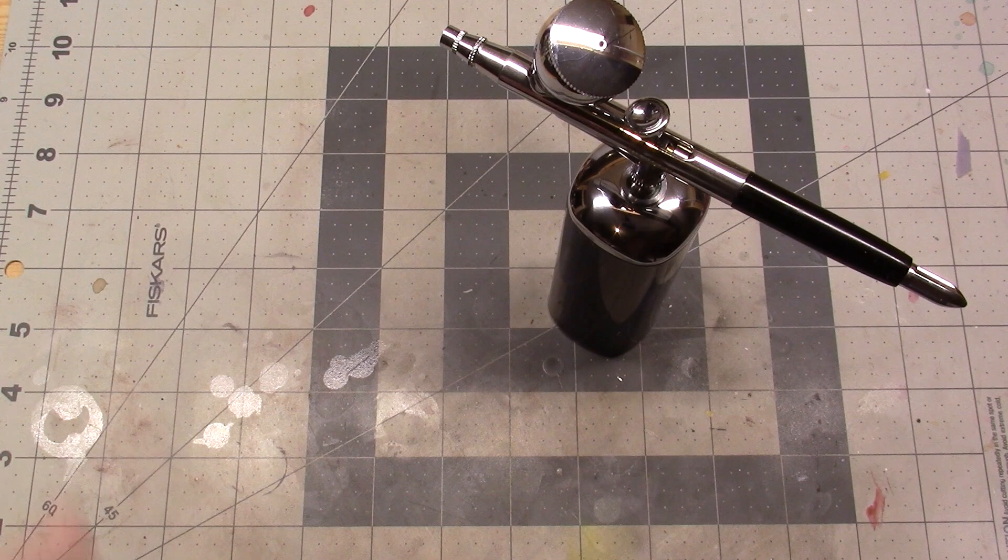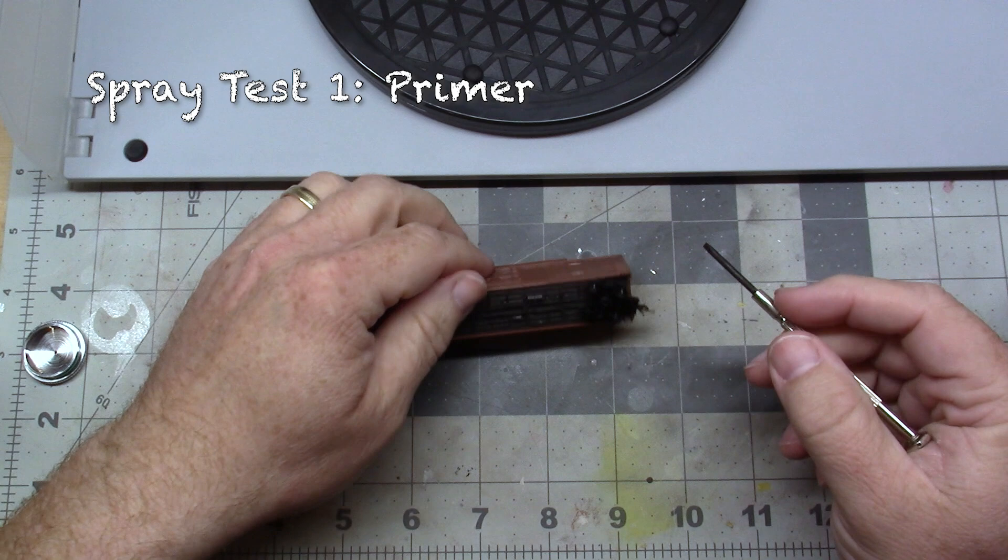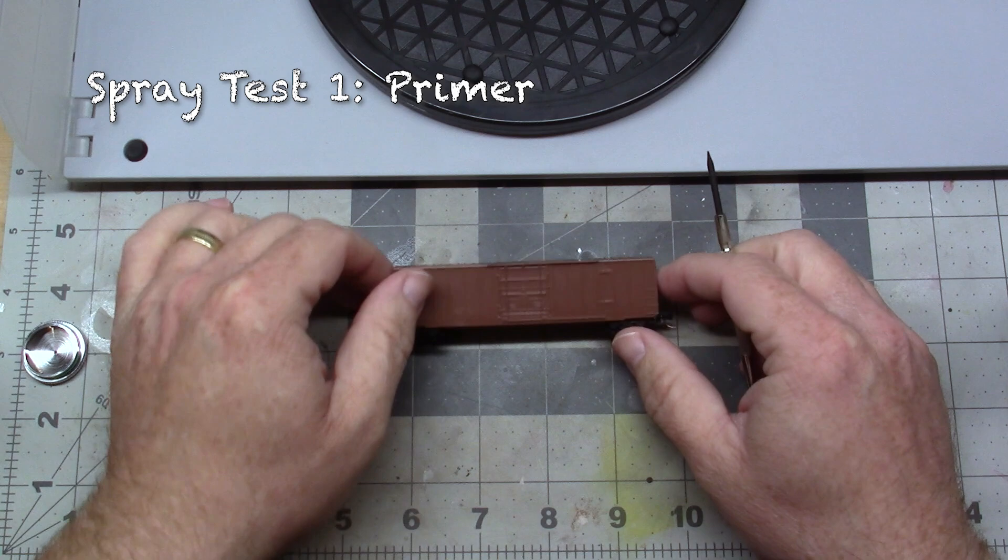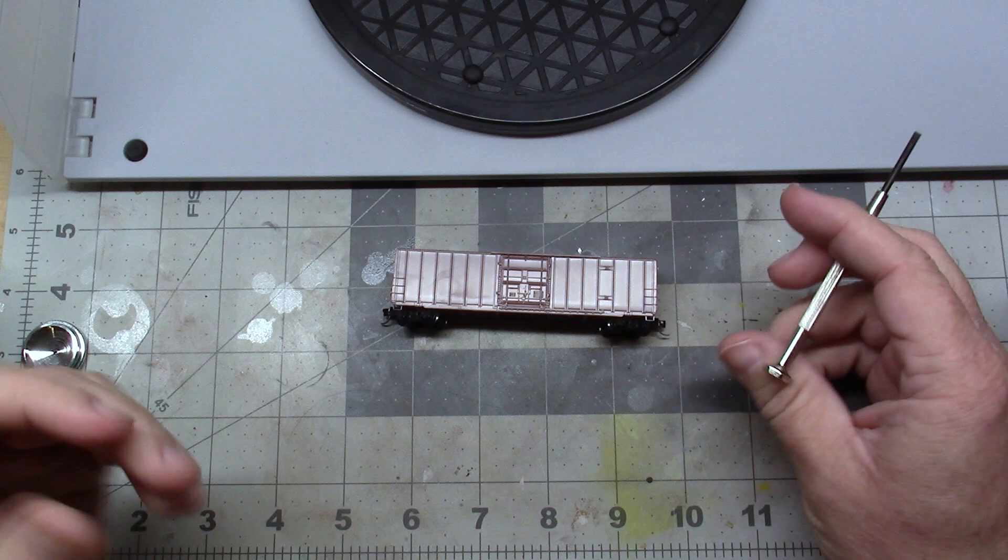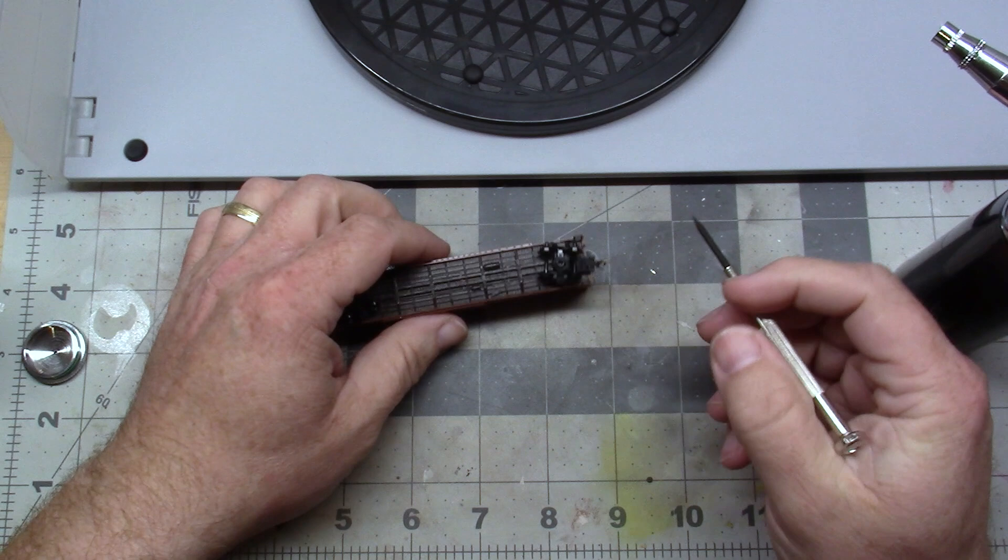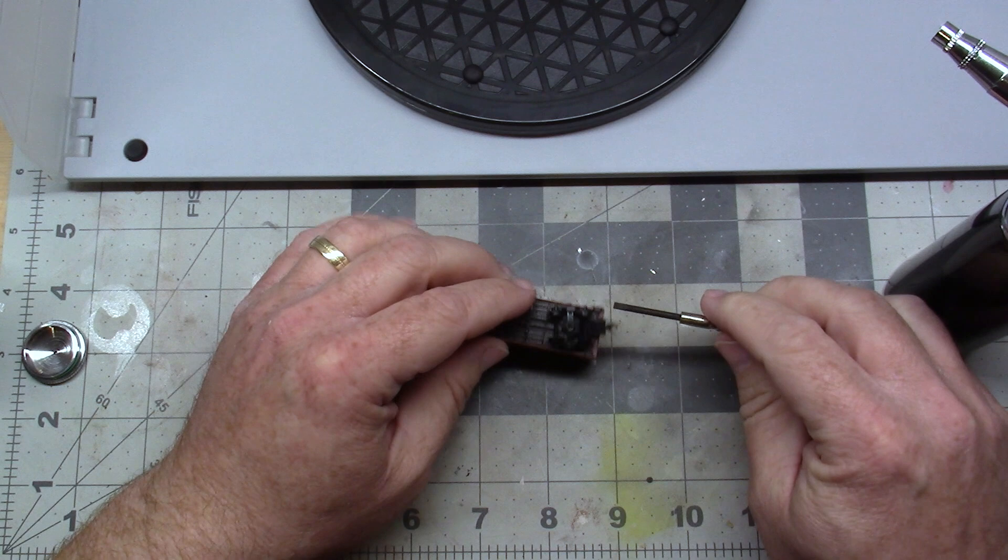All right. I'm going to be doing just a little bit of a test on this using this undecorated boxcar to prime it white using Stynylrez primer. I'm going to be testing out the airbrush, but this boxcar is basically, I'm looking to do just an overall base coat on this, but the first thing I need to do is I need to actually remove the trucks.